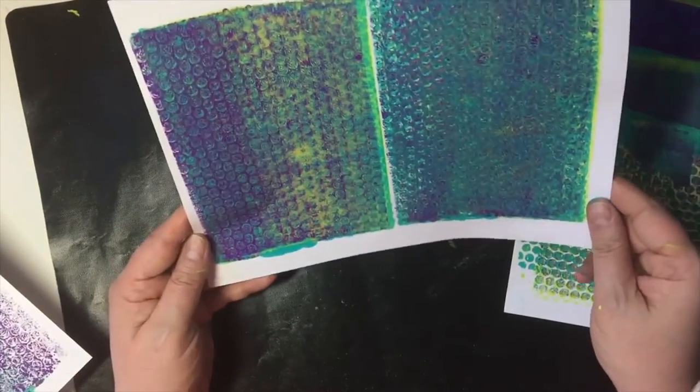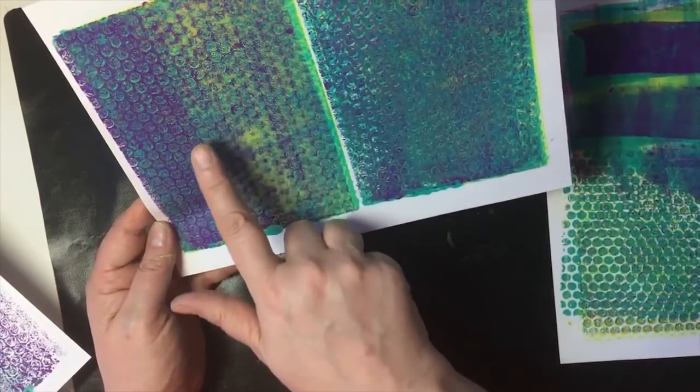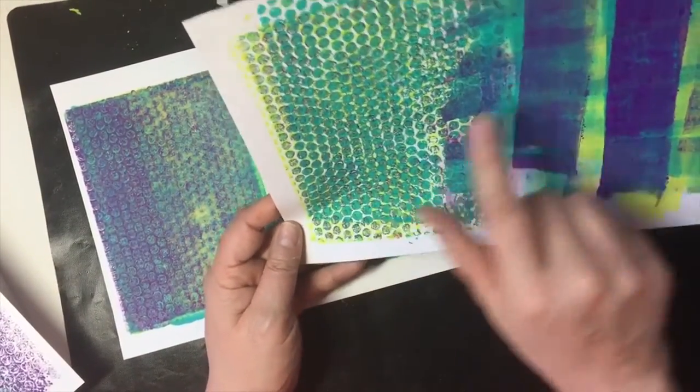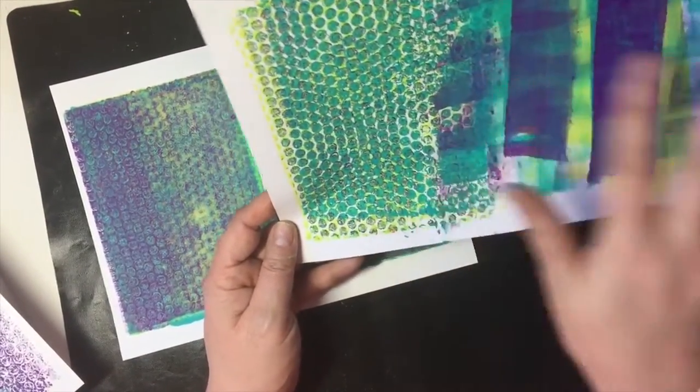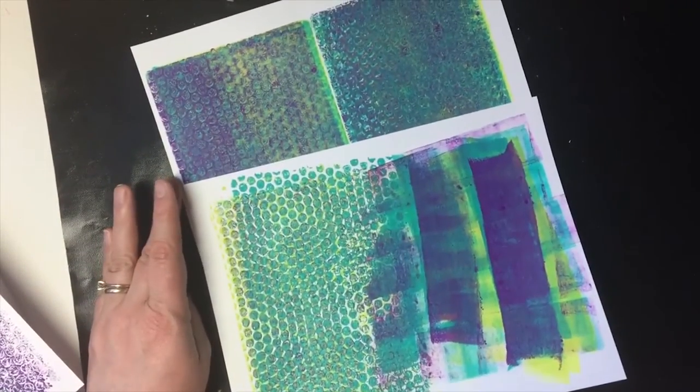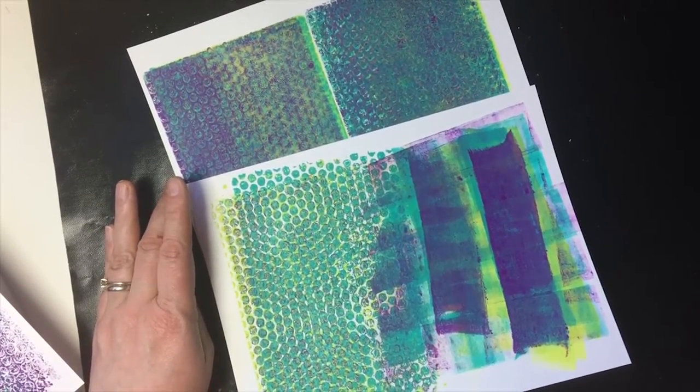And that was just using one piece of bubble wrap, three colors, the first print, ghost print, print off of my bubble wrap and my brayer roll off. So you can see, we got a bunch of different effects just from a really quick printing session.